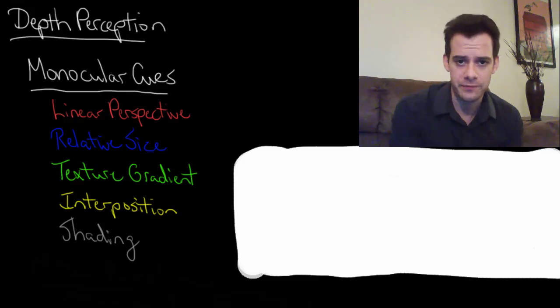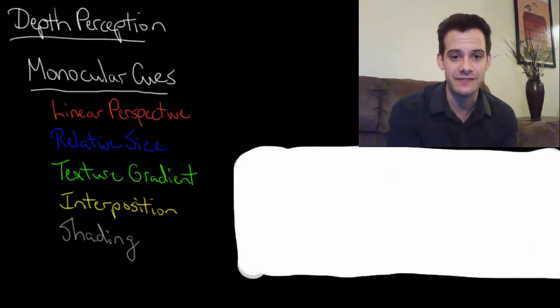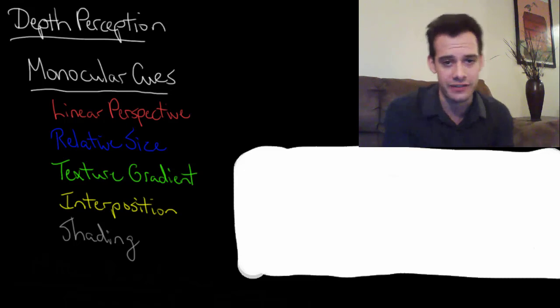Next we have texture gradient. This is the idea that we can see things more clearly when they're close to us. We can see textures. So if you're looking out and you can see lots of detail on something very clearly and crisply, that tells you that it's probably close to you. It's not really far off in the distance because if it were you wouldn't be able to see it that clearly.